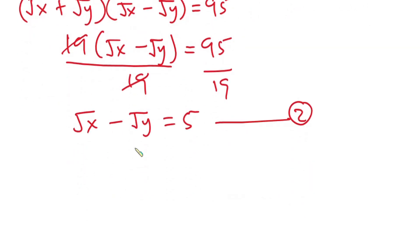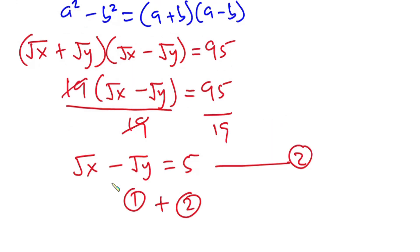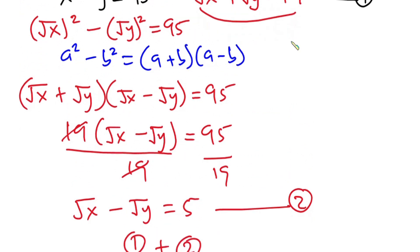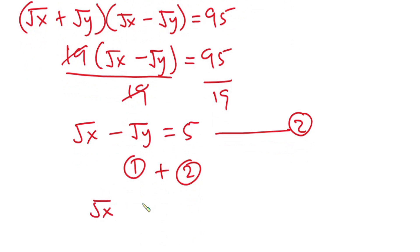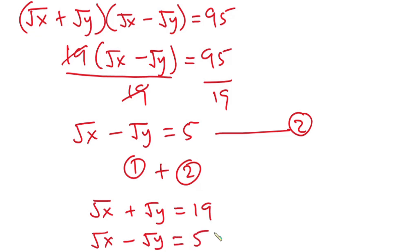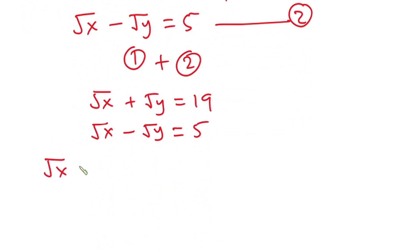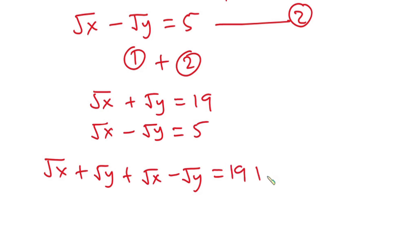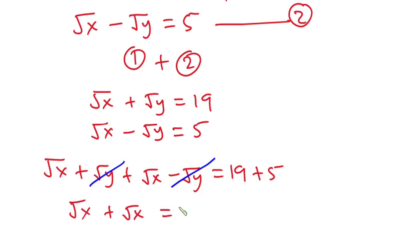Now I'll compute equation 1 plus equation 2. Equation 1 is: square root of x plus square root of y equals 19. Equation 2 is: square root of x minus square root of y equals 5. Adding them together, the positive square root of y and the negative square root of y cancel out, leaving square root of x plus square root of x equals 19 plus 5, which is 24.